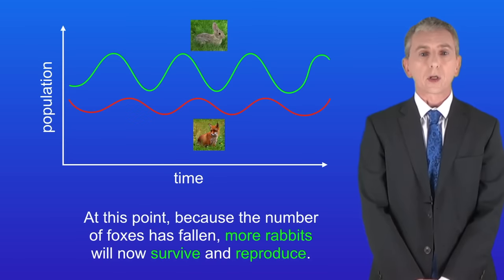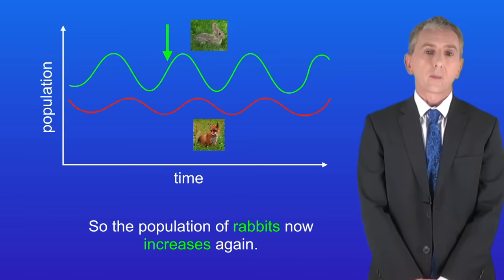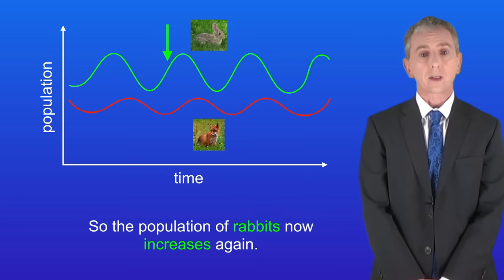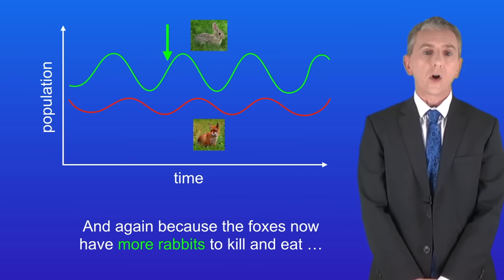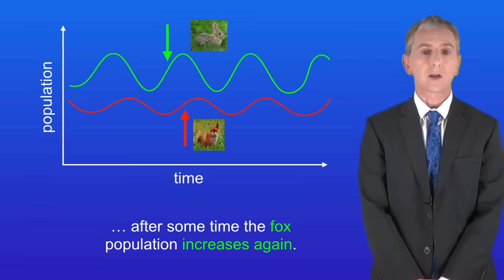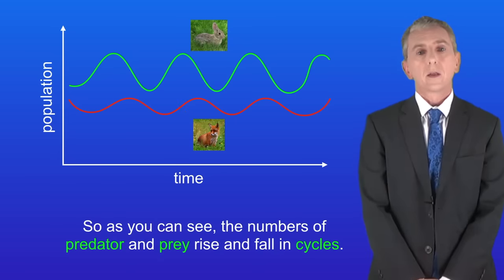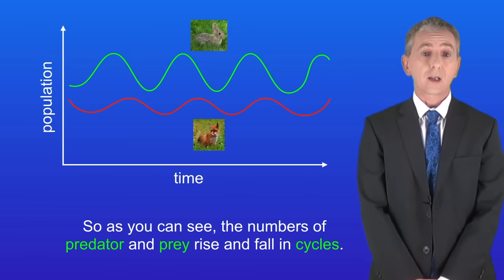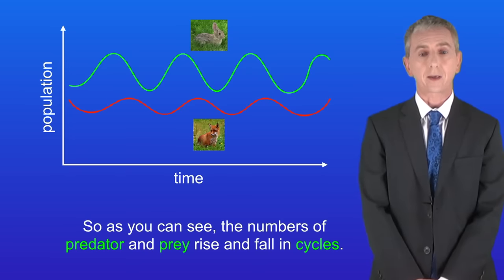At this point because the number of foxes has fallen more rabbits will now survive and reproduce so the population of rabbits now increases again and again because the foxes now have more rabbits to kill and eat after some time the fox population increases again. So as you can see the numbers of predator and prey rise and fall in cycles.